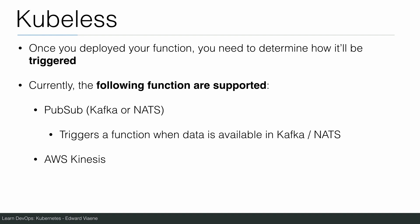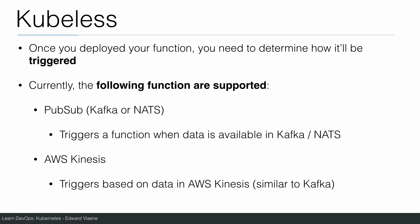You can also use AWS Kinesis, which triggers based on data in AWS Kinesis — similar to Kafka, it's also a pub/sub mechanism. You can subscribe to AWS Kinesis, and when data is available it will trigger the function. Next are a few demos to show you how Kubeless works.